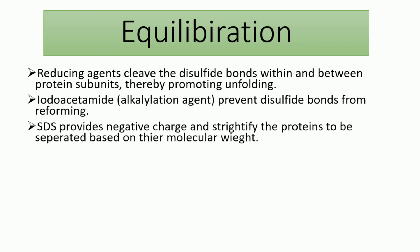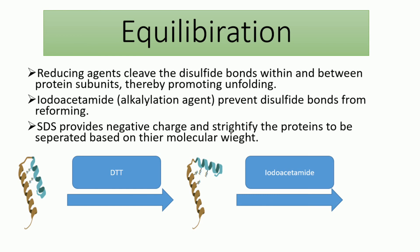Equilibration is the second step. In this case, we need to add reducing agents like DTT to disrupt the disulfide bonds within the proteins. To prevent those disulfide bonds from reforming, we add iodoacetamide as an alkylation agent. We also treat the proteins with SDS, which provides the proteins with negative charge in the same mass-to-charge ratio so they will be separated only based on their molecular weights and also to straighten the peptide chains of the proteins.